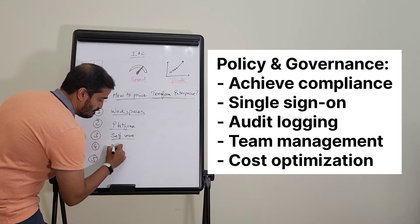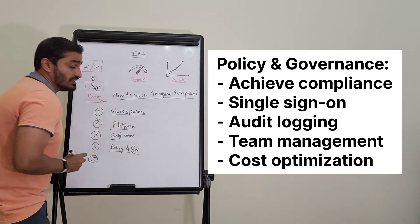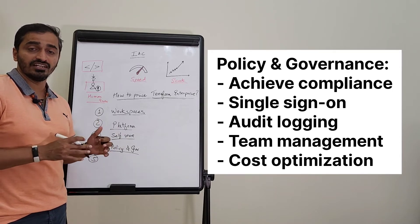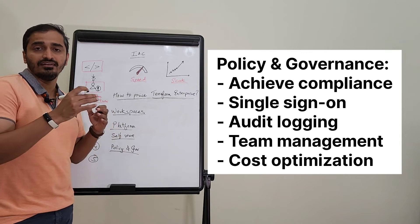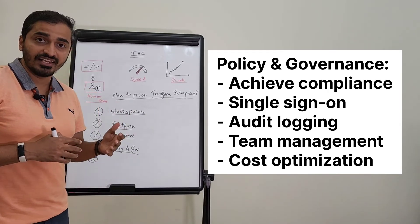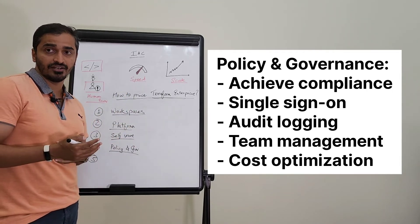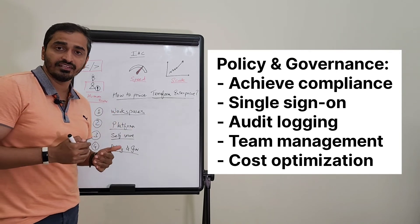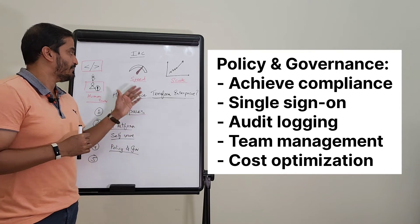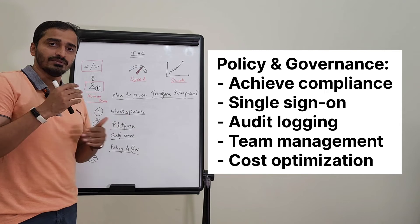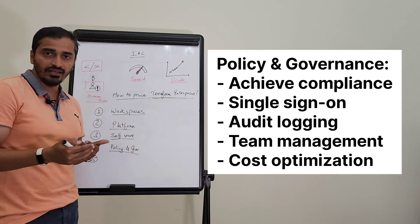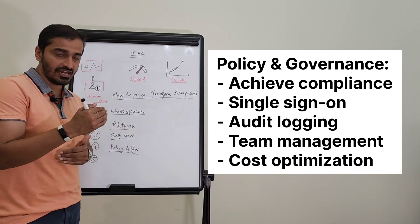The fourth factor is policy and governance. This is also a key add-on to Terraform Enterprise — it helps you determine what kind of policy, governance, and compliance measures you want to enforce on users. Advanced capabilities include things like single sign-on across different applications, audit logging of everything you do, and cost optimization features to determine where you're spending money on infrastructure provisioning. These specific features are only available with the policy and governance and self-service modules, so you need to pick and choose from the overall product feature set.